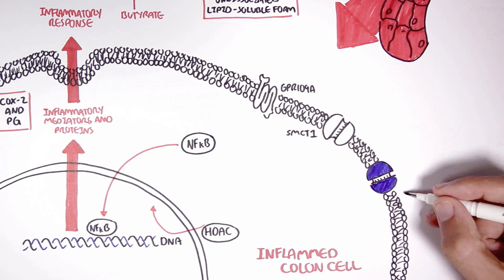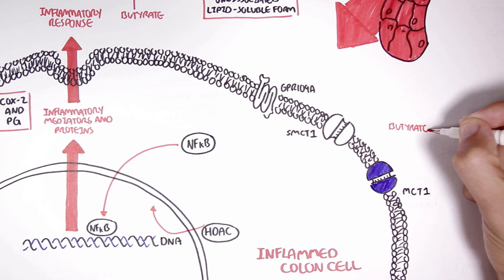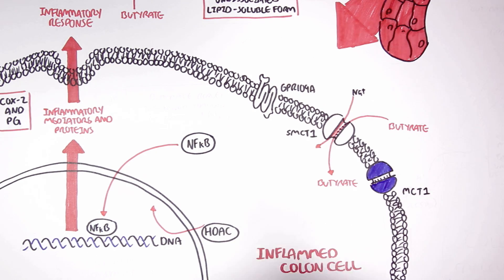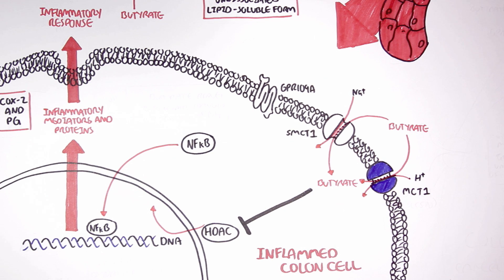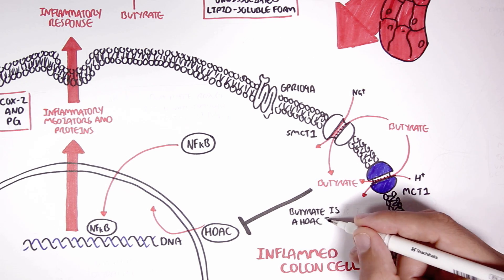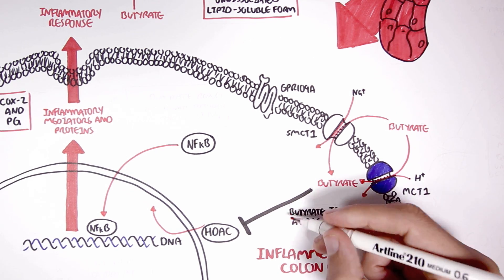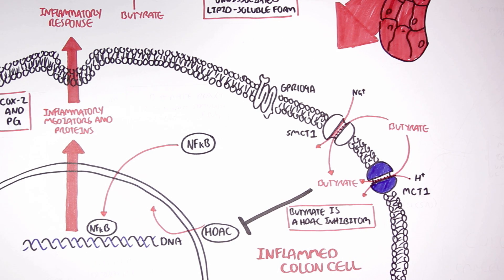Butyrate can enter the inflamed cell through the MCT1 and SMCT1. From here, butyrate can inhibit HDAC, histone deacetylase, because butyrate is a HDAC inhibitor.